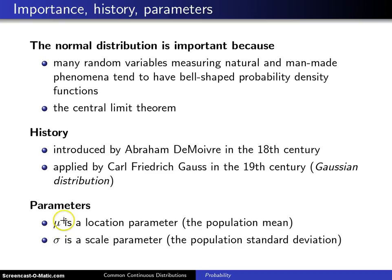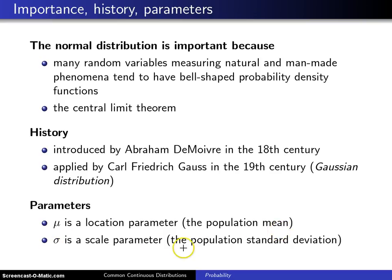Those parameters are mu, which is a location parameter, and its interpretation is that it is the population mean. And then there is sigma, which is a scale parameter, and that parameter is the population standard deviation.